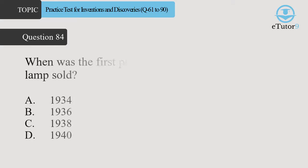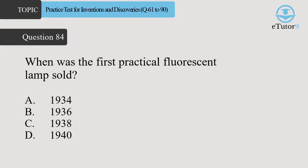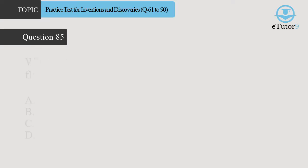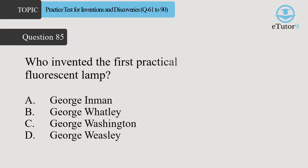Question 84. When was the first practical fluorescent lamp sold? Answer is C. 1938. Question 85. Who invented the first practical fluorescent lamp? Answer is A. George Inman.